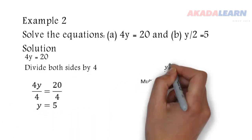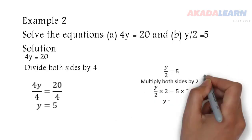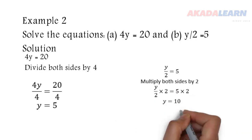The next one: y/2 = 5. To make y stand alone, I will multiply both sides of the equation by 2. Now y is equal to 10.